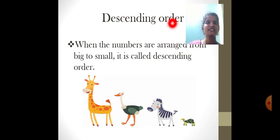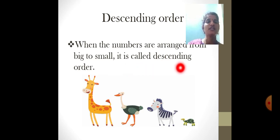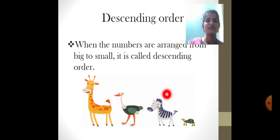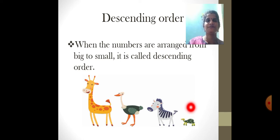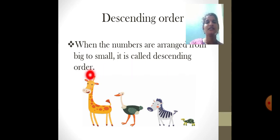Descending order. What is descending order? When numbers are arranged from big to small, it is called descending order. Bigger number to smaller number is called descending order. Using the same animals: from biggest to smallest — giraffe, then emu, then zebra, and the smallest animal is tortoise. That is descending order — bigger to smaller.